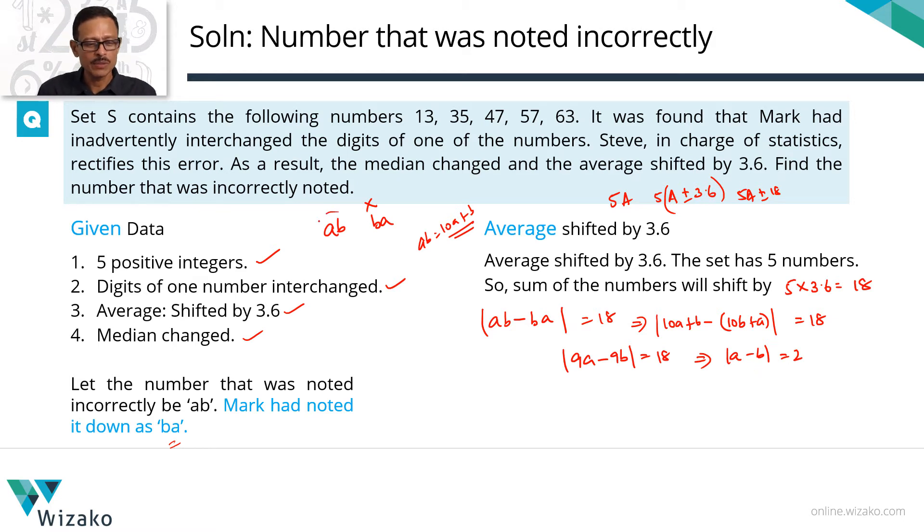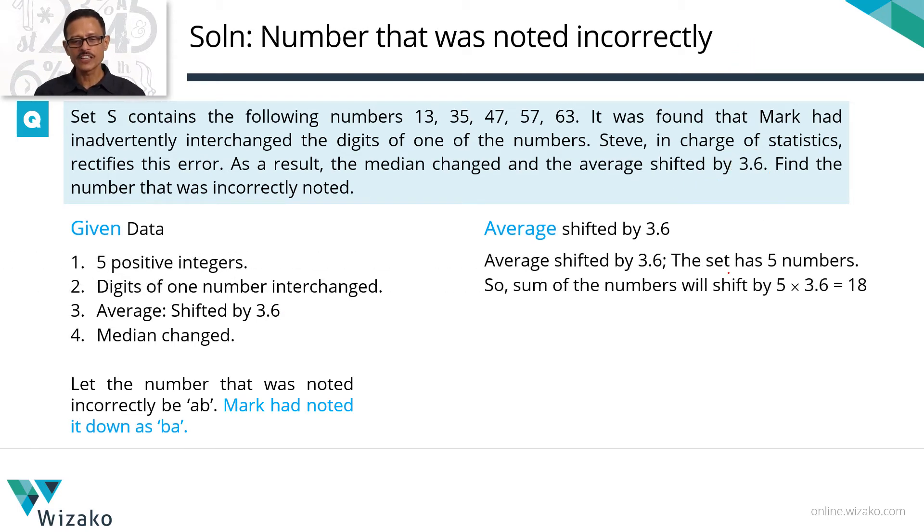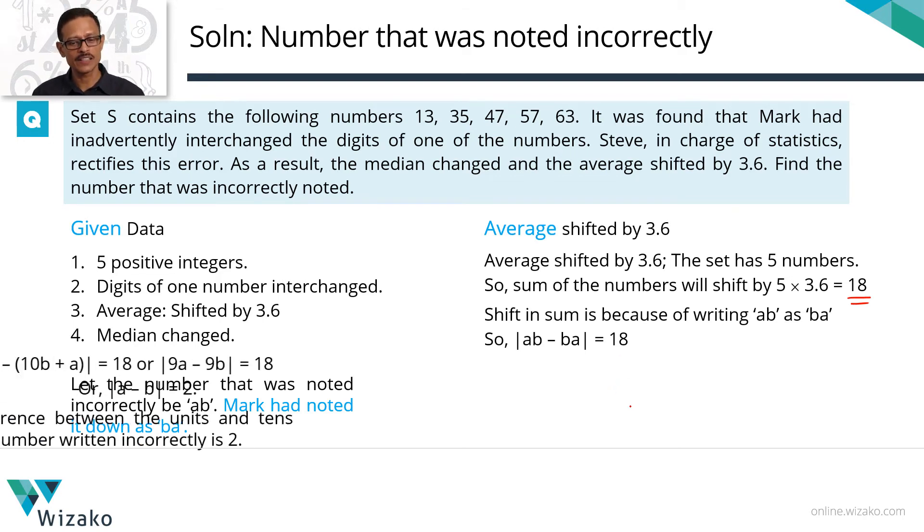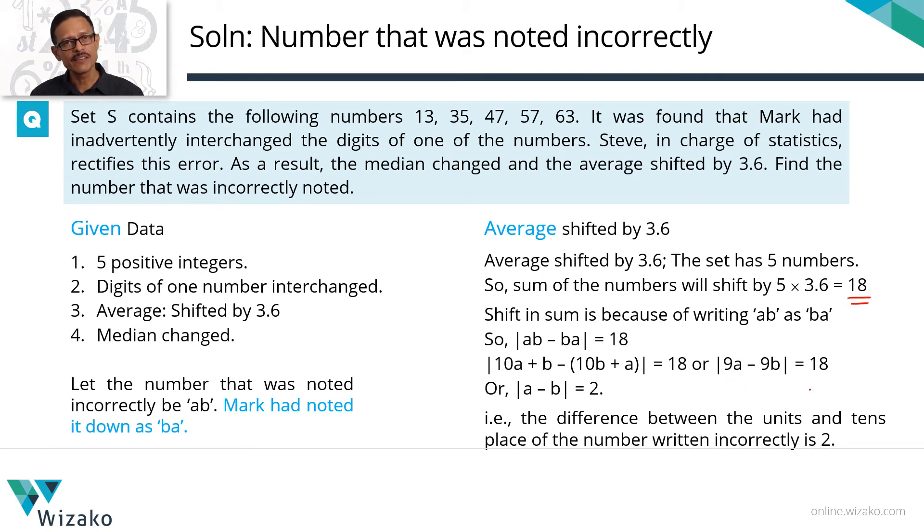What is modulus of A minus B? We know that the number is AB. So for example, if the number is let's say 57, we are saying the difference between the digits A and B is equal to 2. So based on this information that the average shifted by 3.6, what we have been able to deduce is the number that he noted down incorrectly is such a number in which the difference between the tens and the units place is 2. 57 incidentally is one such number. Average shifted by 3.6, so the sum would have shifted by 18. Why did the sum shift by 18? It's because of noting down this number AB as BA. So difference between AB and BA should be equal to 18. AB can be written as 10A plus B. BA can be written as 10B plus A. So the difference between the two is modulus of 9A minus 9B. Divide both sides by 9, we get modulus of A minus B equals 2. What does this mean? The difference between the units and tens place of the number that was incorrectly noted is 2.